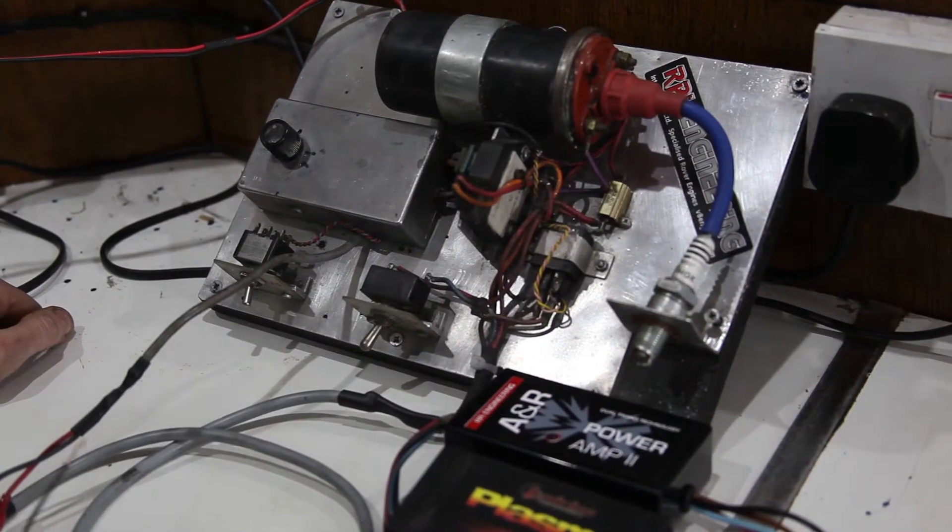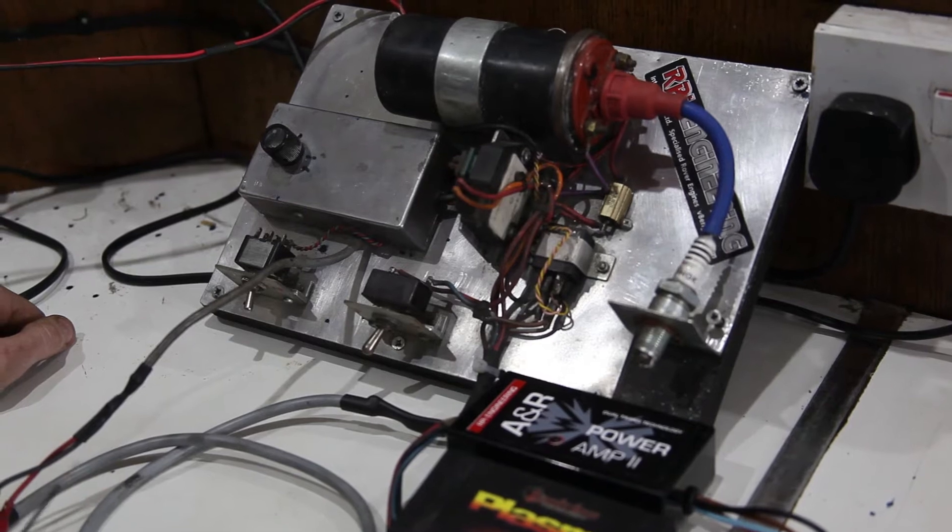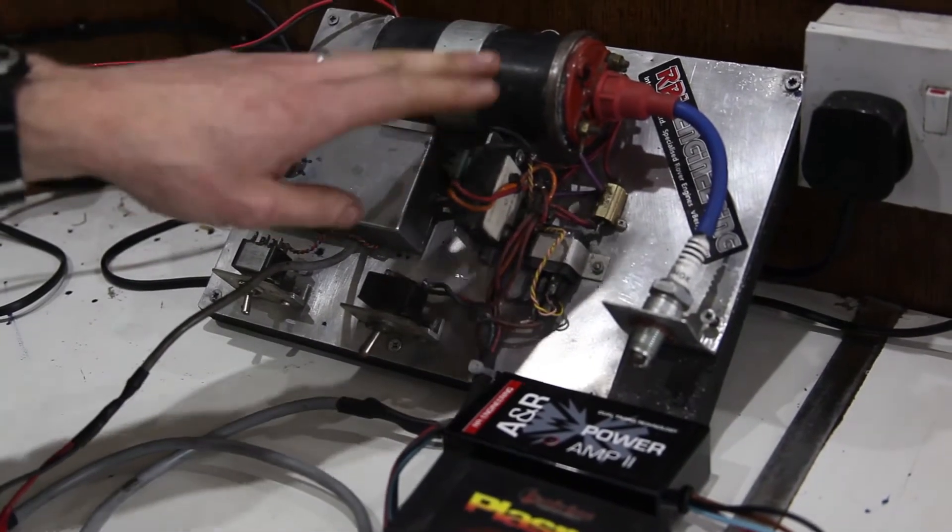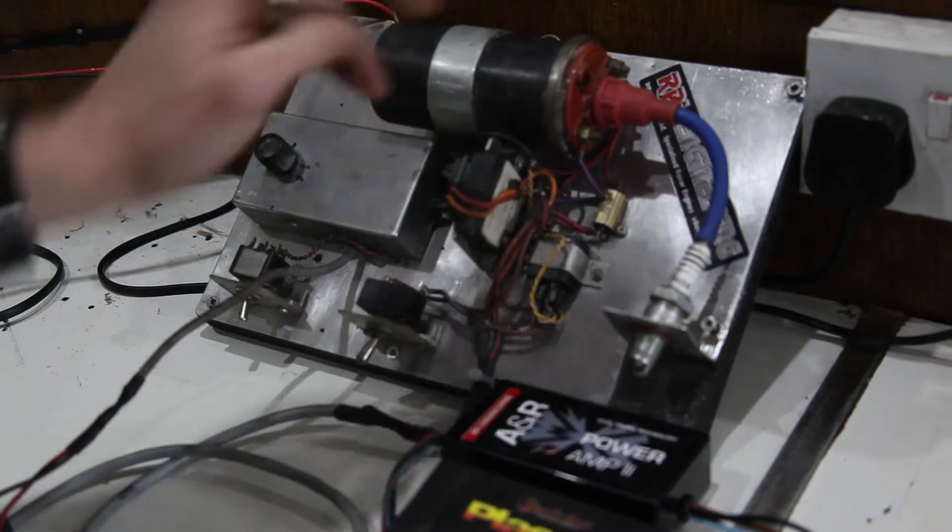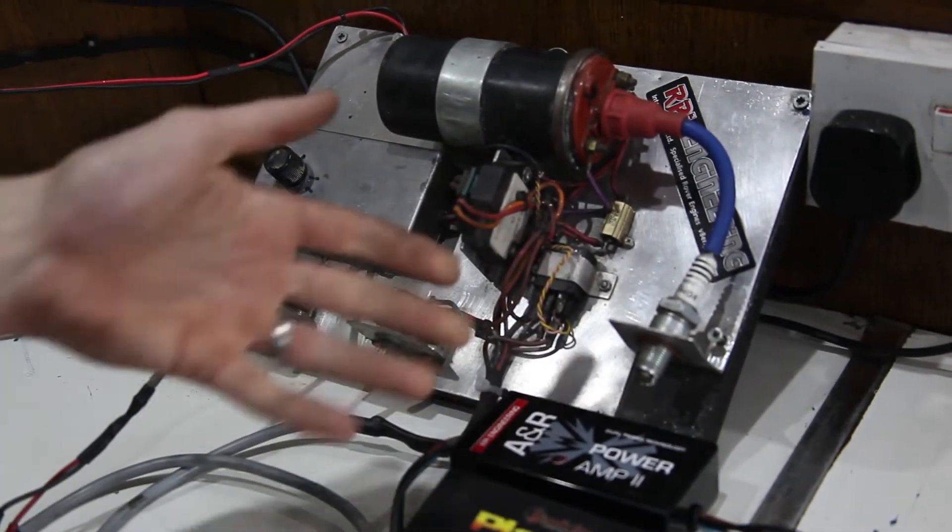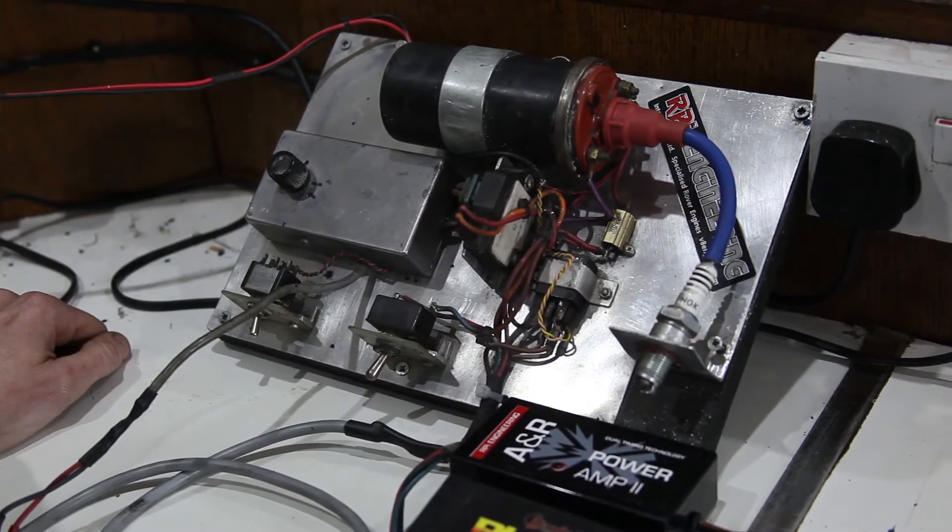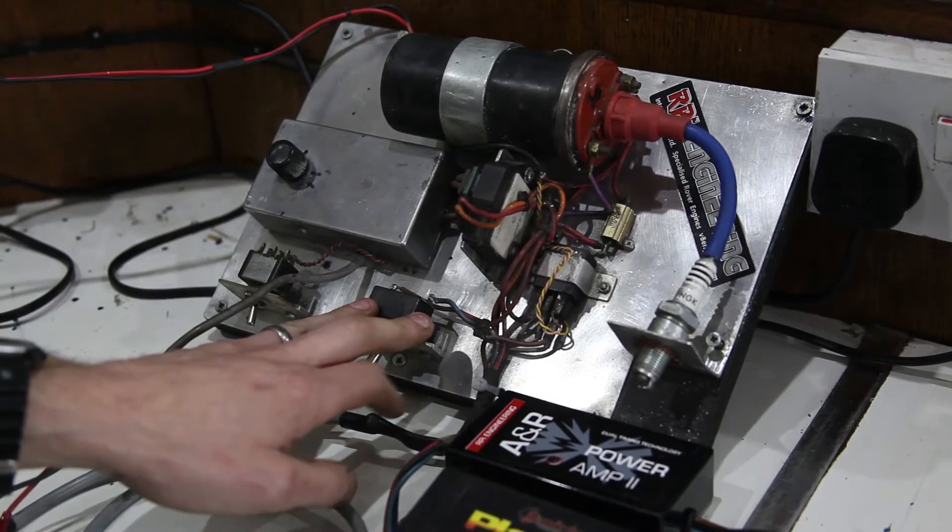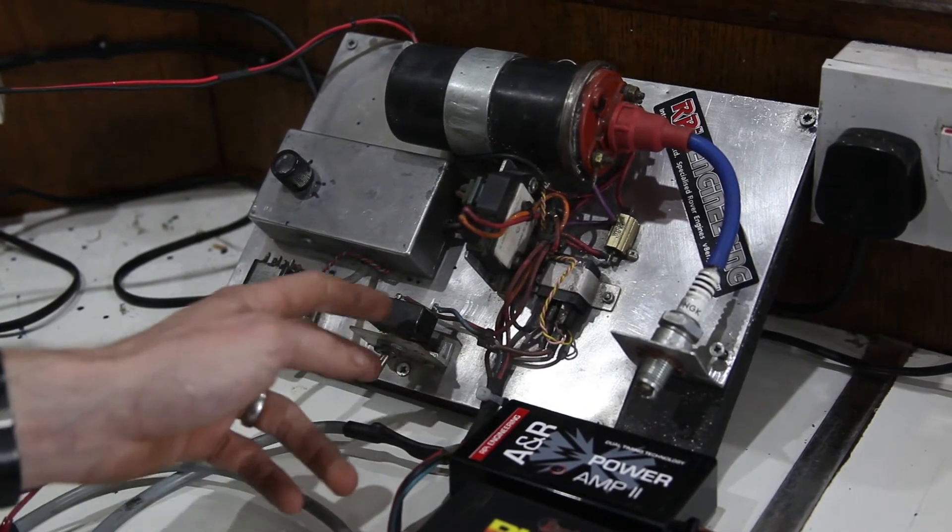This is our amplifier tester which you've seen in previous videos. It allows us to switch between a standard Lucas amplifier and the RPI amplifier. We use it for testing all amplifiers before they get sent out. We'll be ignoring the switch on the right today; this is just our petrol and LPG position for the dual timing amplifiers.